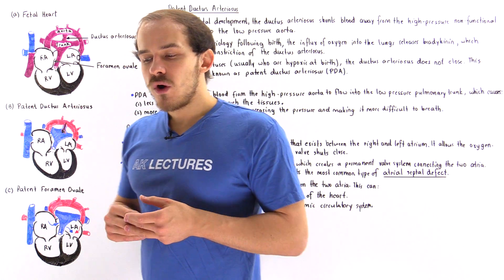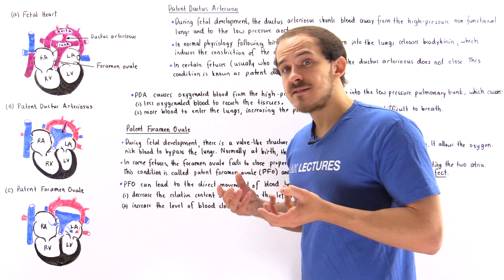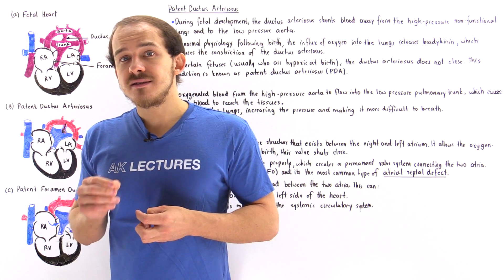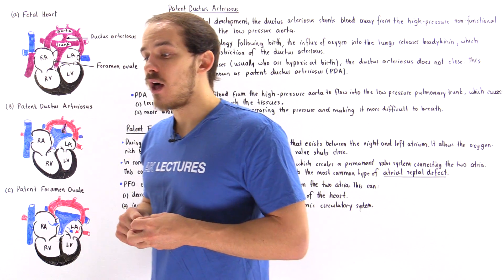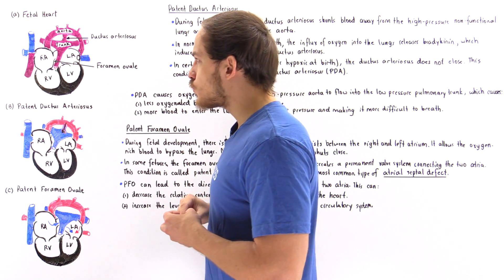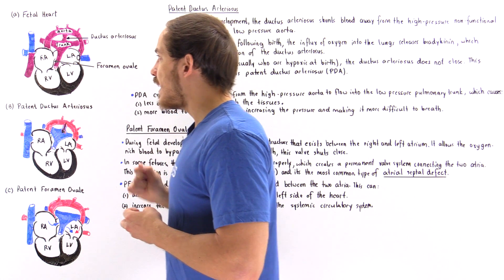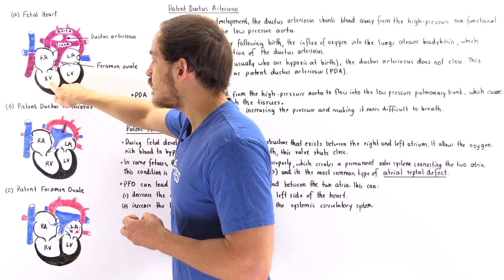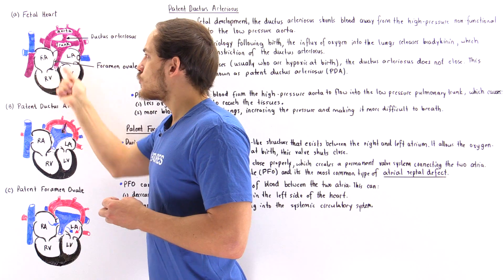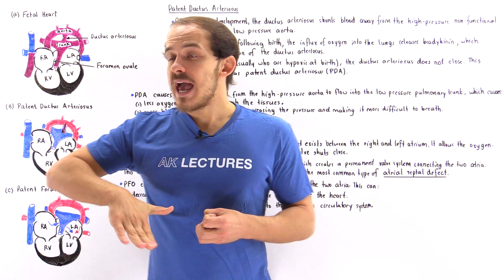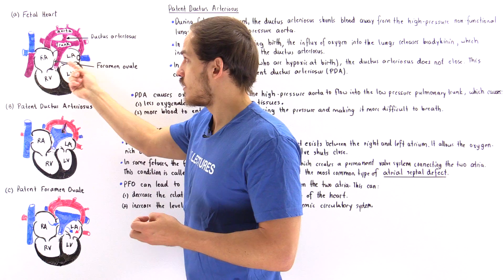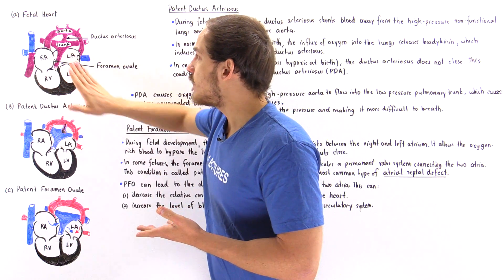What happens at birth? As soon as the fetus is born and takes their first breath, air rushes into the alveoli of the lungs and displaces the fluid within them, which decreases and drops the resistance and pressure inside those lungs. As soon as the pressure drops, blood inside the right atrium can begin moving easily into the right ventricle, then into the pulmonary trunk and into the lungs. More blood rushing into the lungs means the lungs pump more blood into the left atrium, so pressure on the left side increases.